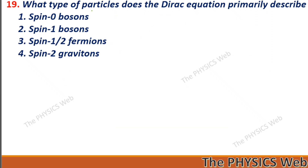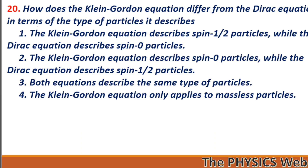Next: what type of particles does the Dirac equation primarily describe? That is spin-half fermions. So, three is your correct option. And the Klein-Gordon equation describes spin-zero particles.